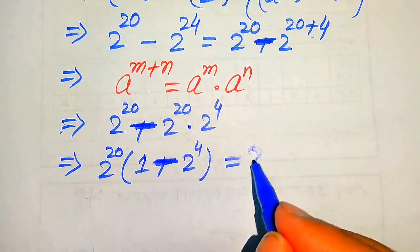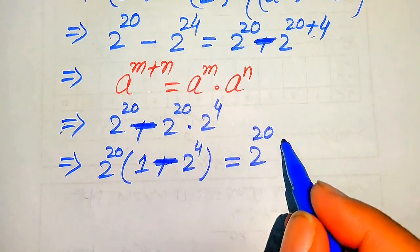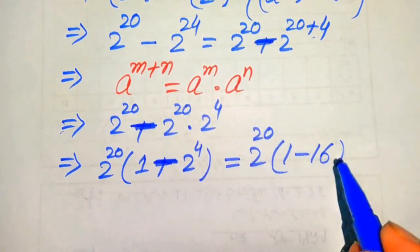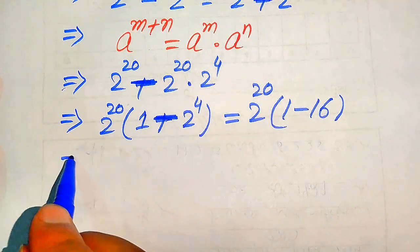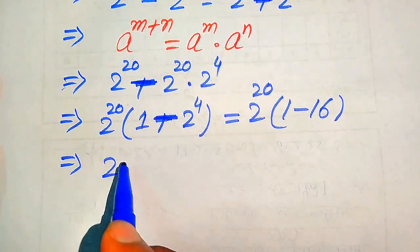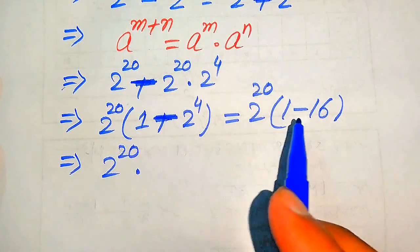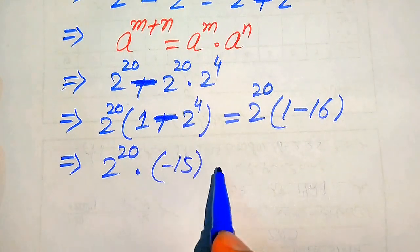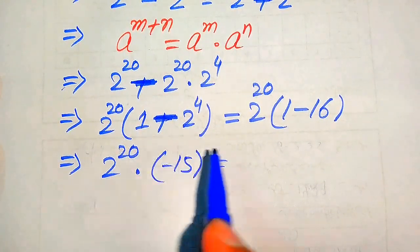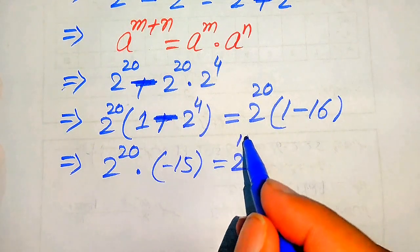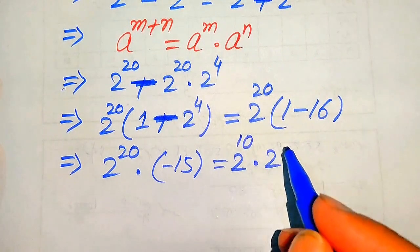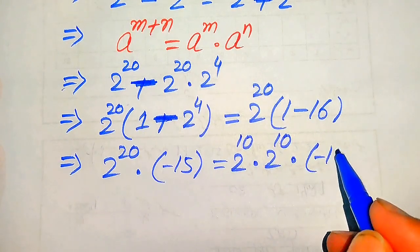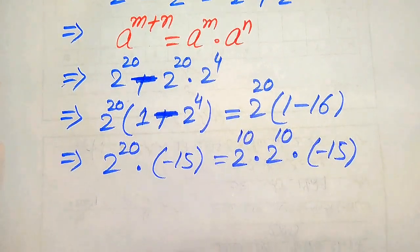We know that 2 to the power of 4 equals 16. We subtract the two values: 1 minus 16 equals minus 15, giving 2 to the power of 20 times minus 15. We then break 2 to the power of 20 as 2 to the power of 10 multiplied by 2 to the power of 10, also multiplied by minus 15.